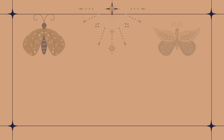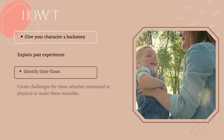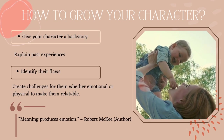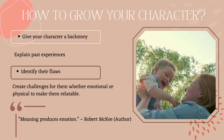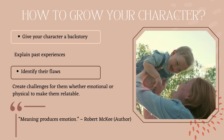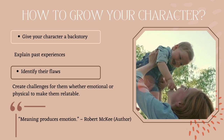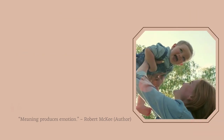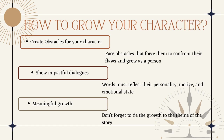Moving on to the next factor: Number 2, Character Growth. How do you grow your character in a movie script? Point 1: give your character a backstory — develop a detailed history that explains their past experiences and how they became who they are today. Point 2: identify their flaws. No one is perfect, and your character should have flaws and weaknesses that create challenges and make them relatable to the audience. Point 3: create obstacles for your character. They should face challenges that force them to confront their flaws and grow as a person, learning from their mistakes, overcoming obstacles, and being transformed by the end of the movie.